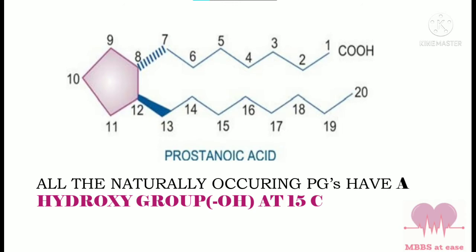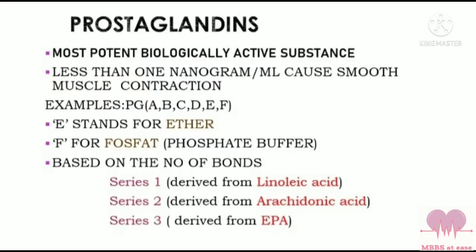An exception to the cyclopentane structure is thromboxane. Thromboxanes have a six-membered oxygen ring at positions 8 and 12. Prostaglandins are the most potent biologically active substances — less than 1 nanogram per milliliter can cause smooth muscle to contract.